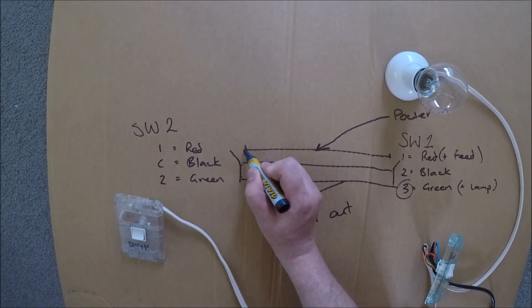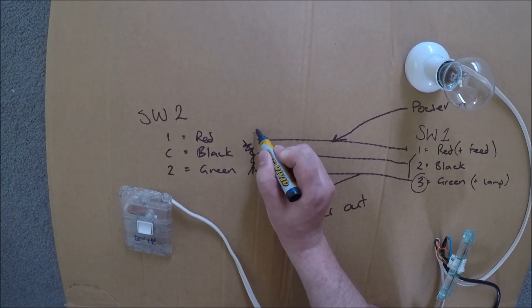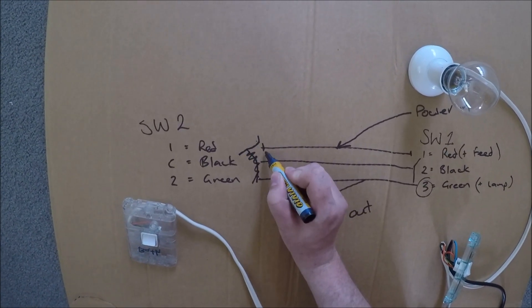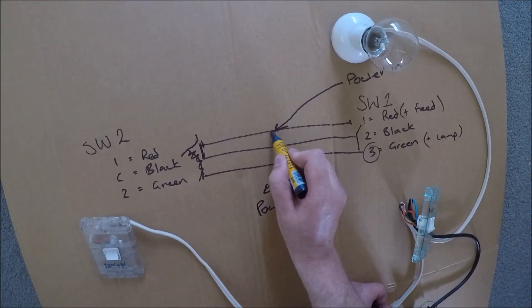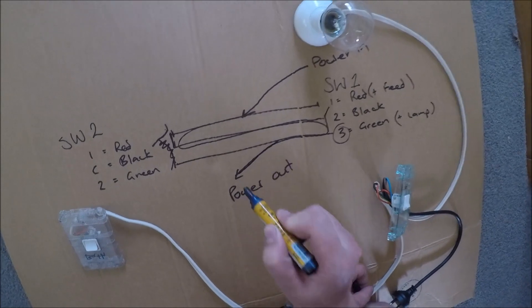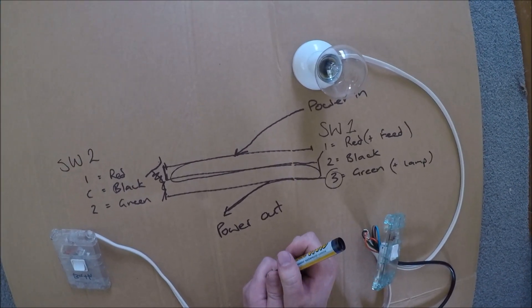If we switch this switch into the opposite position like that, then those two would be touching. And we'd have a connection from here straight out to the light. I think that's the easiest way to explain it.